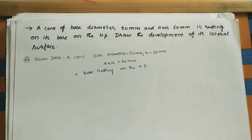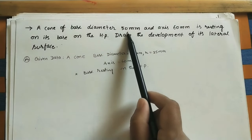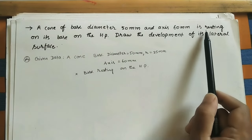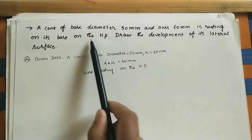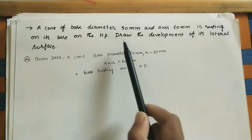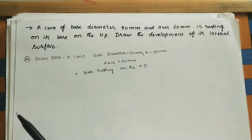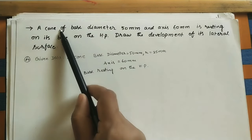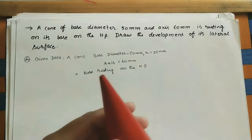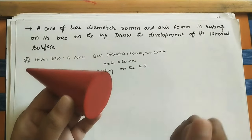Welcome to my channel. Let us discuss the development of the cone. The given data is a cone of base diameter 50mm and axis 60mm, resting on its base on the HP — the horizontal plane. Here the cone is given, so I am taking this model. The base is in the form of a circle.